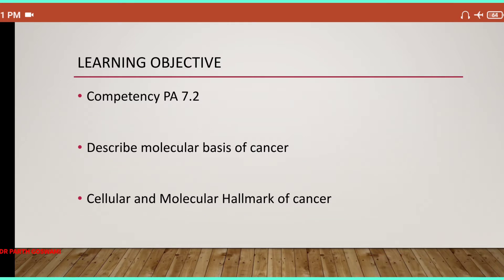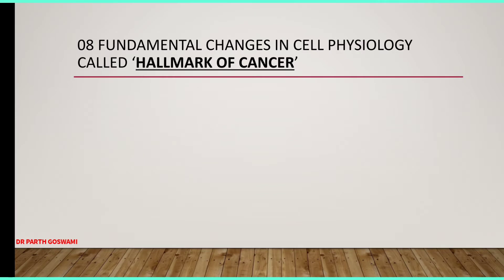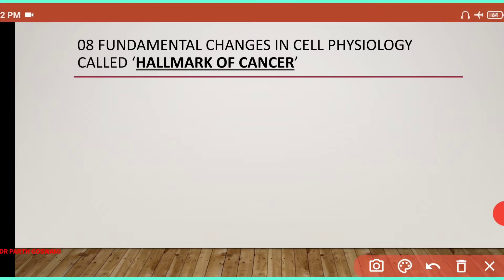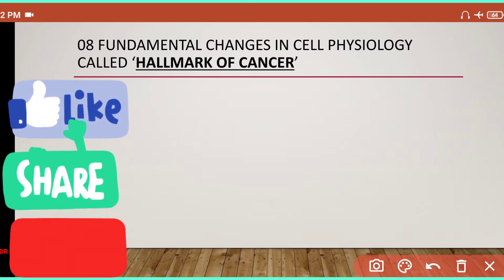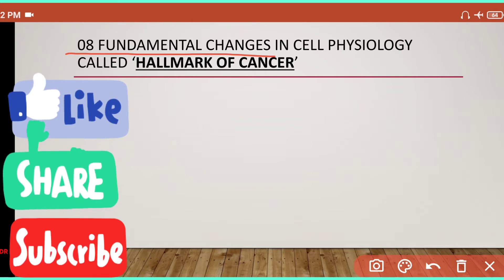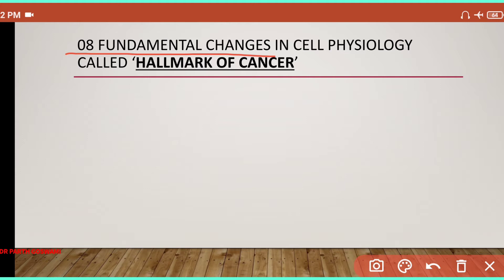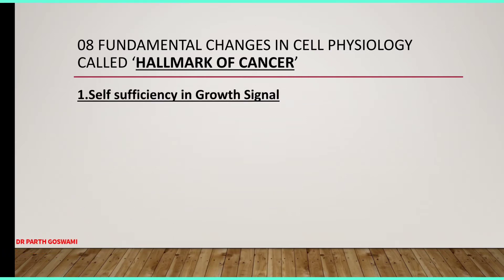There are basically eight fundamental changes that occur in cell physiology for cancer to develop. These eight basic fundamental changes are known as the molecular hallmarks of cancer, also called the cellular and molecular hallmarks of cancer. Every cancer happens because of these eight basic fundamental changes. We will see each one by one.